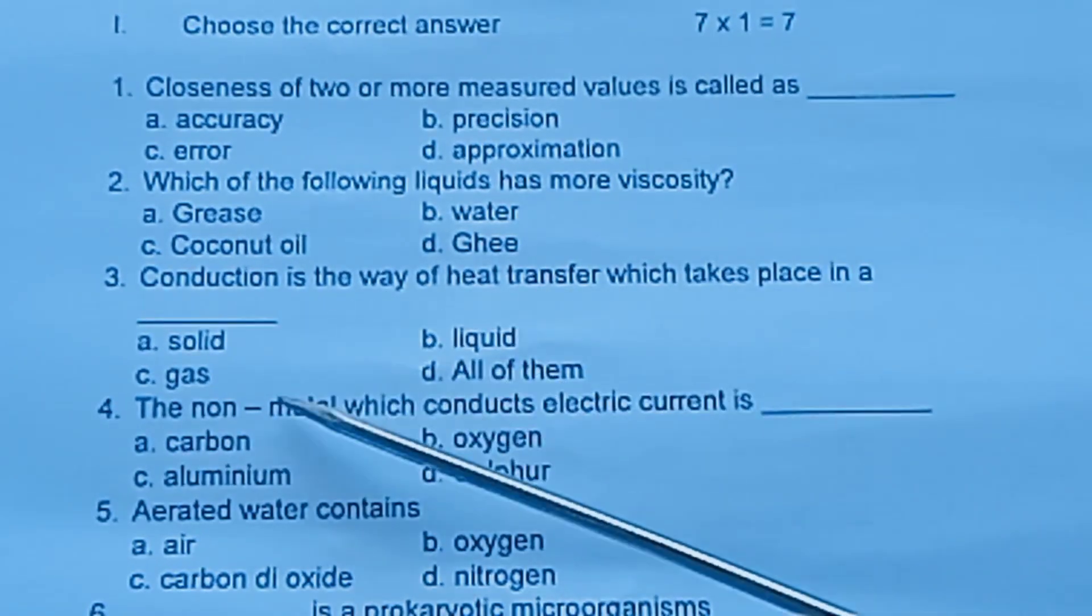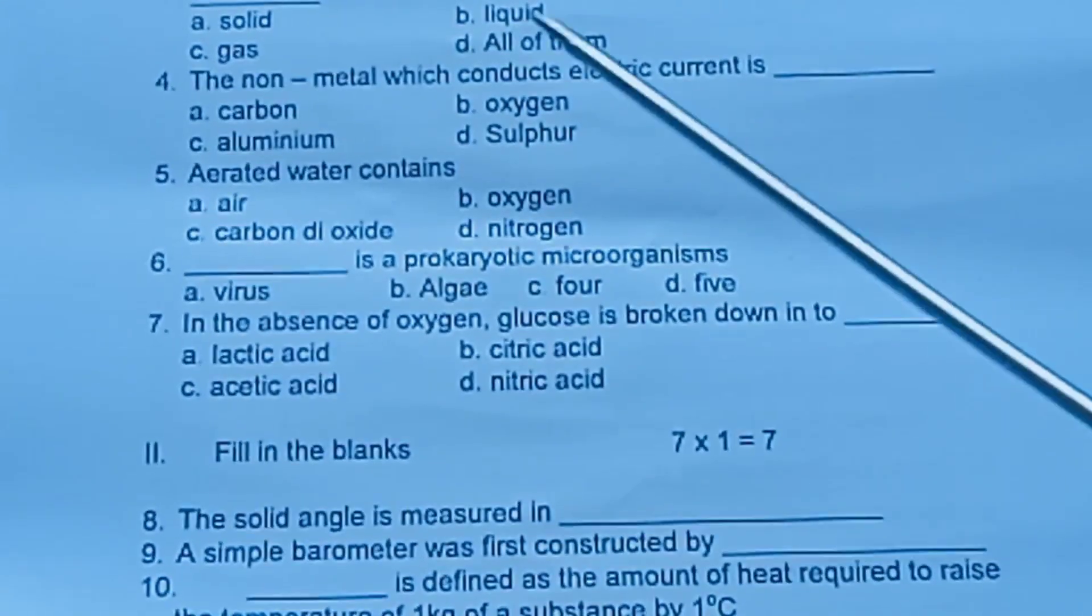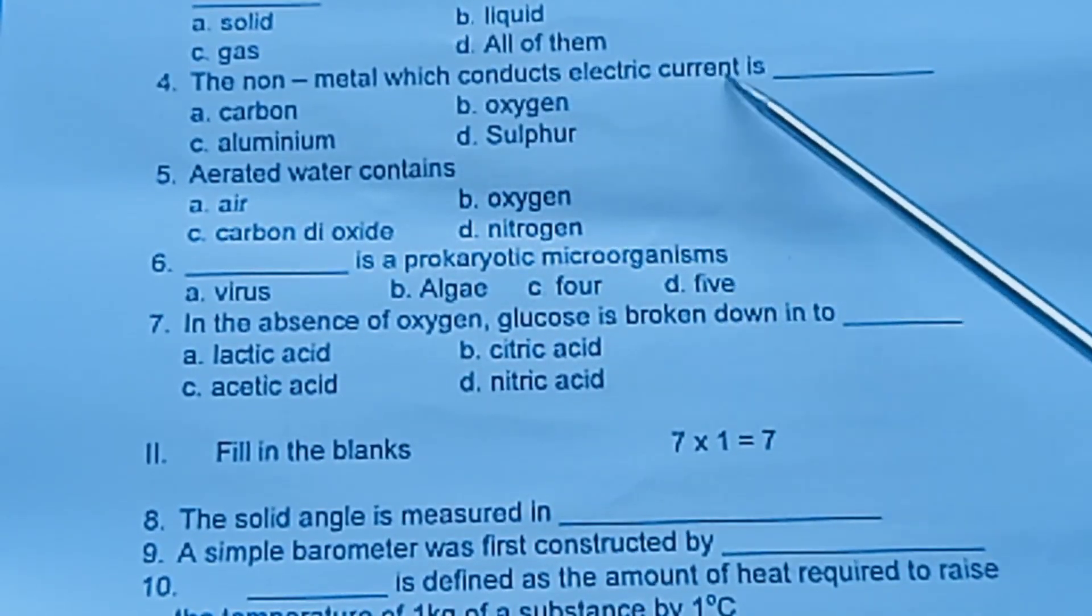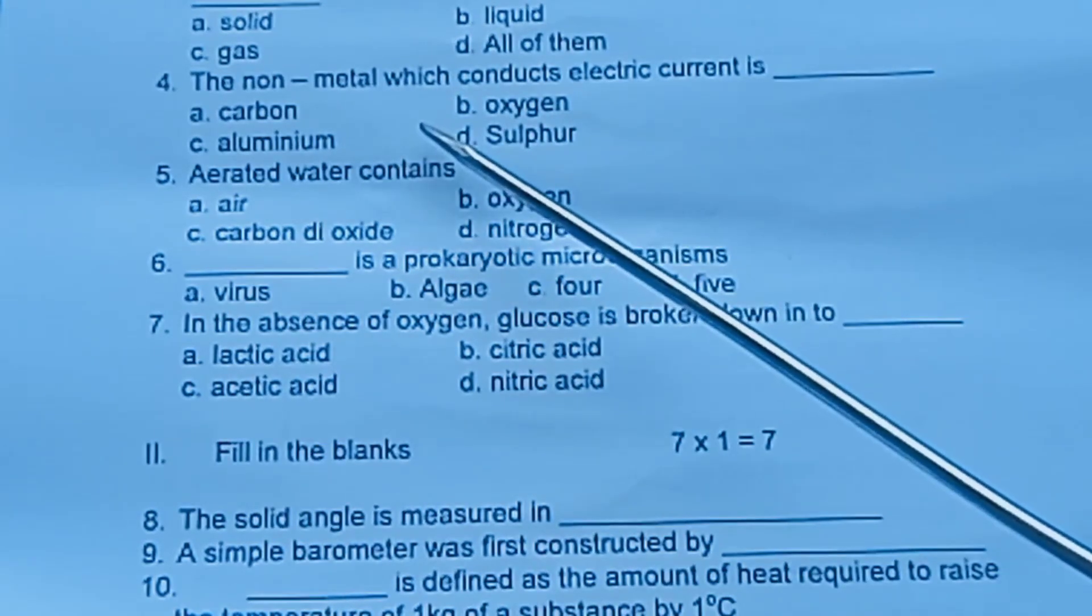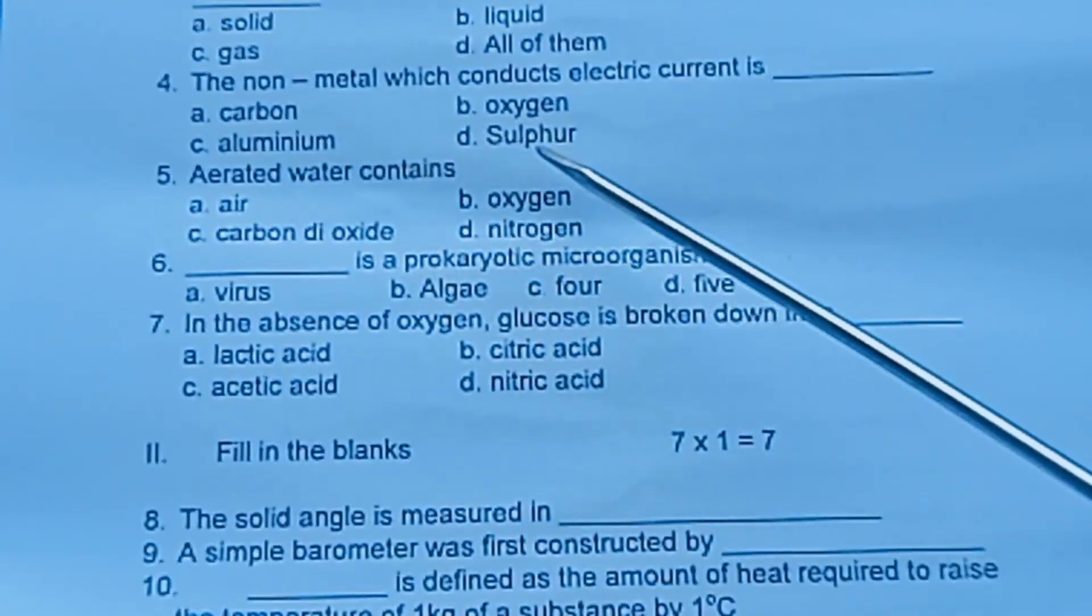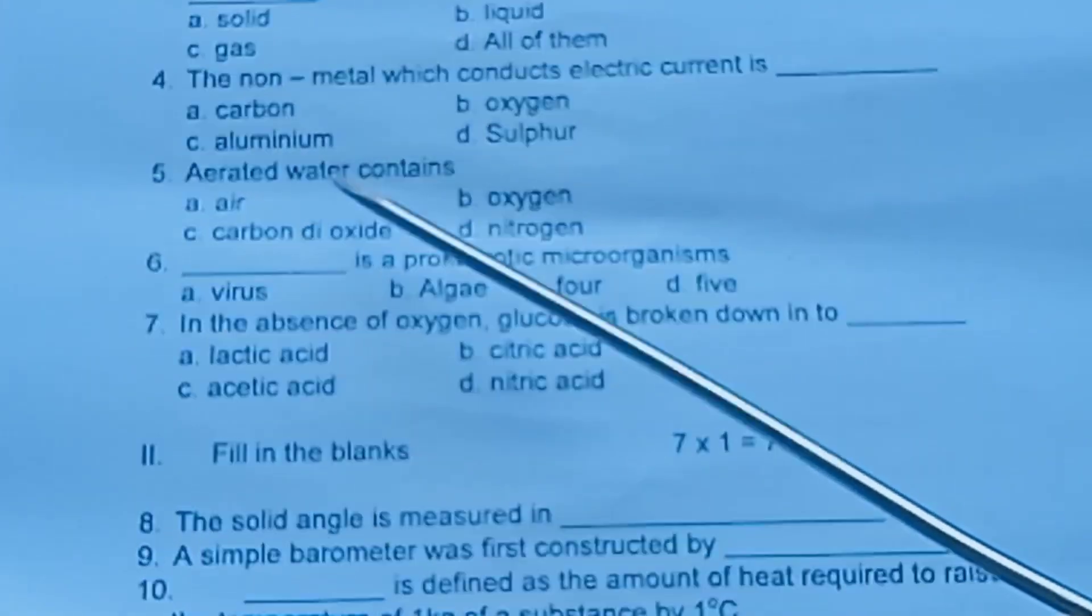Question 3: Conduction is the way of heat transfer which takes place in a - solid, liquid, gas, or all of them. Question 4: The non-metal which conducts electric current is - carbon, oxygen, aluminium, or sulphur.